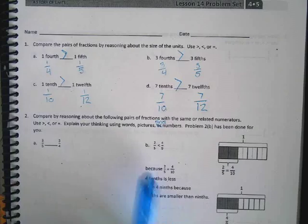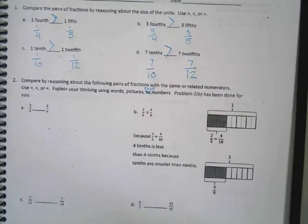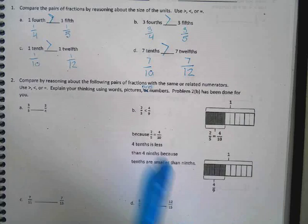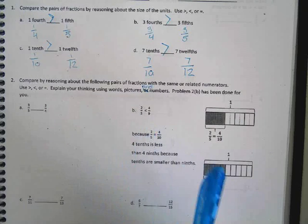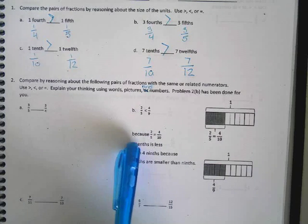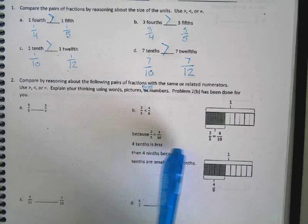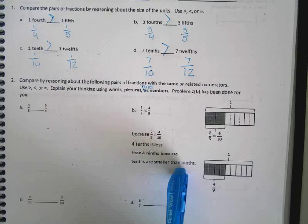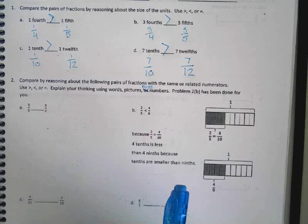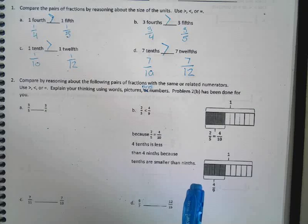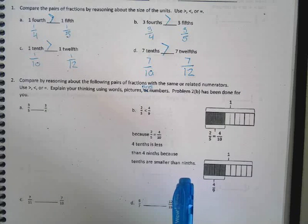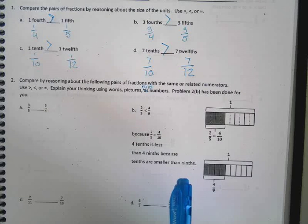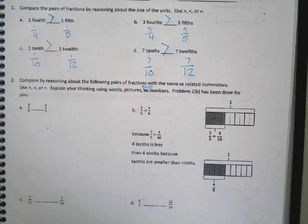So, 2B. I don't know why they didn't do 2A, but they did 2B for us. So, let's check out their work. They said that two-fifths is less than four-ninths. And their reasoning was because two-fifths is equal to four-tenths. Four-tenths is less than four-ninths because tenths are smaller than ninths. Do you guys agree with that? Would you rather have four-tenths of a pizza or four-ninths if you were super-duper hungry? Four-ninths. Yes.